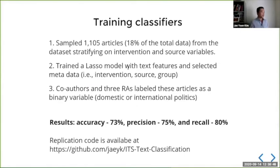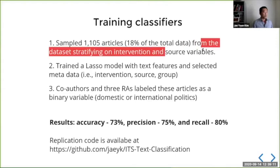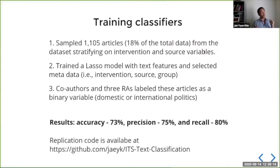For training the classifiers, we randomly sampled 1,015 articles — about 18% of the total data — to define the intervention and source variables. The intervention variable is binary: if text was collected before 9-11 it's zero, if after it's one. The source variable indicates which newspaper it came from — there are two Arab American newspapers and three Indian American newspapers. I trained a LASSO model with text features and selected metadata — intervention, source, and group — and three research assistants labeled the sample articles as a binary variable: domestic or international.